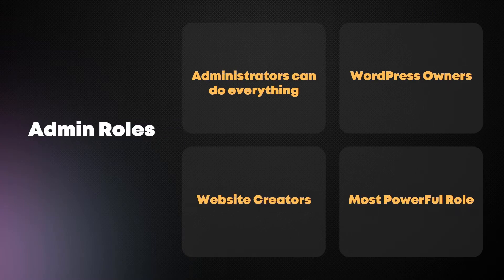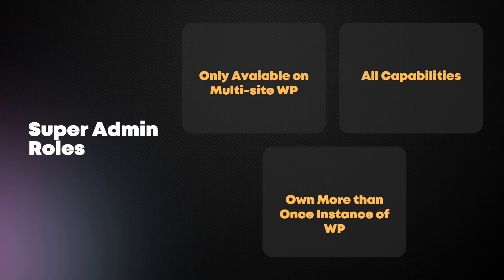Next up, we are going to discuss the admin roles. There are two types of admin roles: the admin and the super admin. Admins are basically administrators that can do anything they want on a WordPress website — they can create posts, delete posts, create users, delete users, create plugins, manage the theme, and everything. They are mostly the WordPress owners or creators, and the admin role is the most powerful role in WordPress. The super admin role is almost identical to the admin role, but the only difference is that it is only available on a multi-site WordPress. It has all the capabilities that a normal admin has but on multiple sites. The super admin is considered super admin only when it owns more than one instance of WordPress.